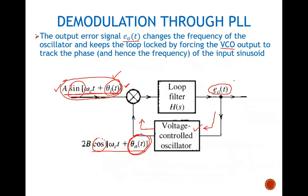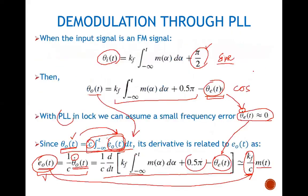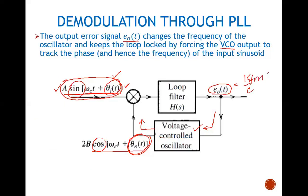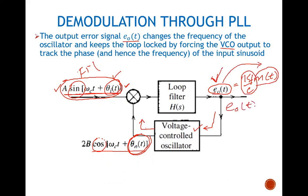Through this discussion, we have seen that the error signal E_0(t) equals K_F divided by C — a constant — multiplied by M(t). Since the frequency of the FM input signal keeps changing, the error voltage adjusts accordingly. This error voltage is directly proportional to M(t), so E_0(t) is proportional to M(t) for an FM signal. This is how we convert frequency variations in the input signal to voltage variations at the output, and that is how we can demodulate an FM signal using a PLL.